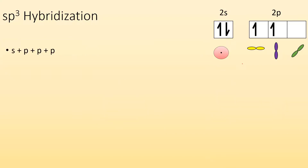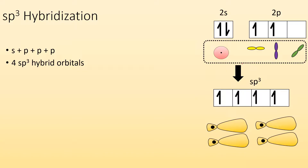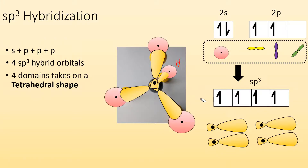For sp3 hybridization, we take an s and the three p's, mix them together, and make four sp3 hybrid orbitals that all look the same. We have four domains around the central atom, which takes on the tetrahedral shape. Methane has this going on — a hybrid orbital reaches out and overlaps with a hydrogen, and this happens everywhere, with all hybrid orbitals reaching out and overlapping with the hydrogen orbitals, giving us a tetrahedral shape.